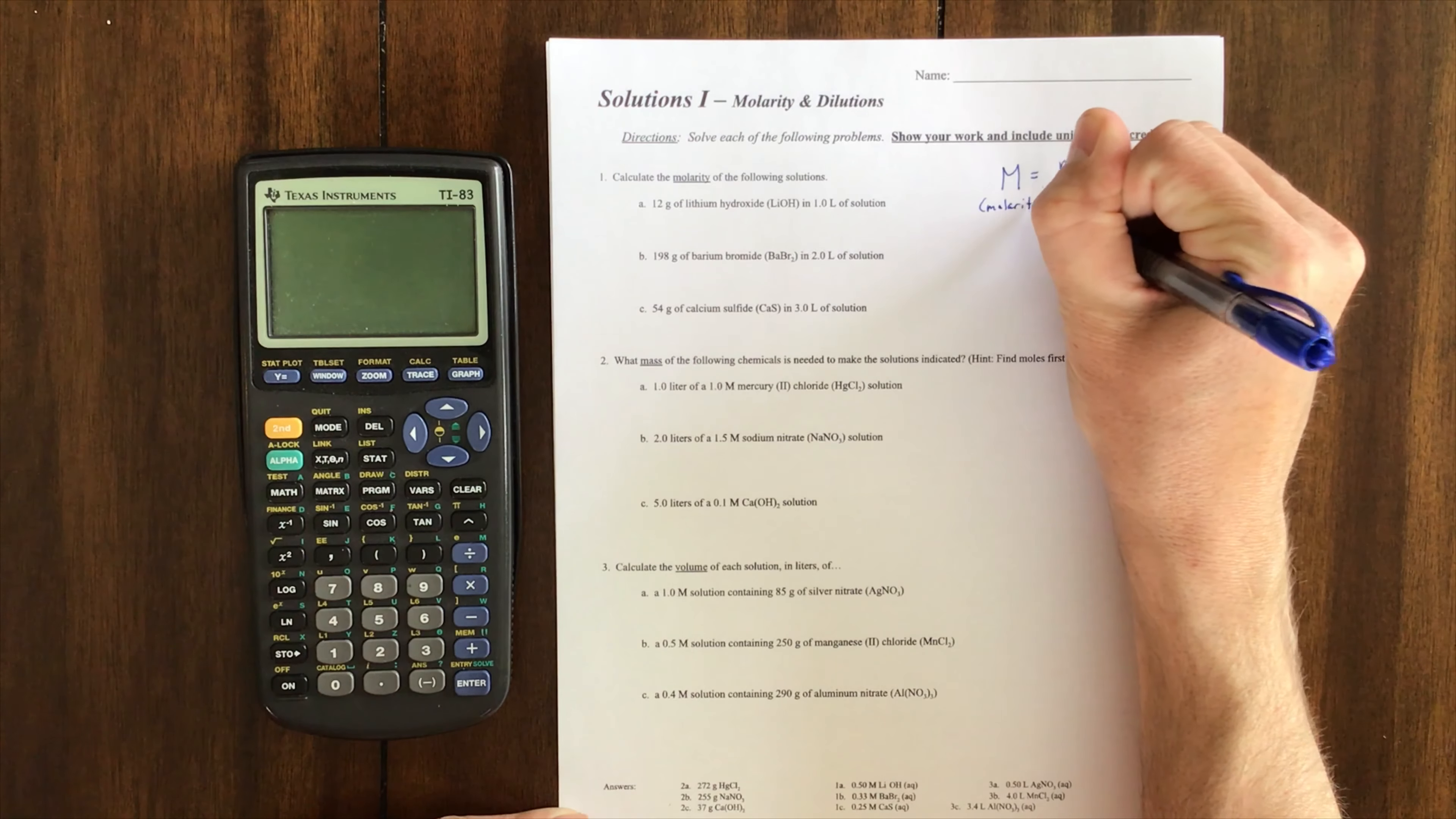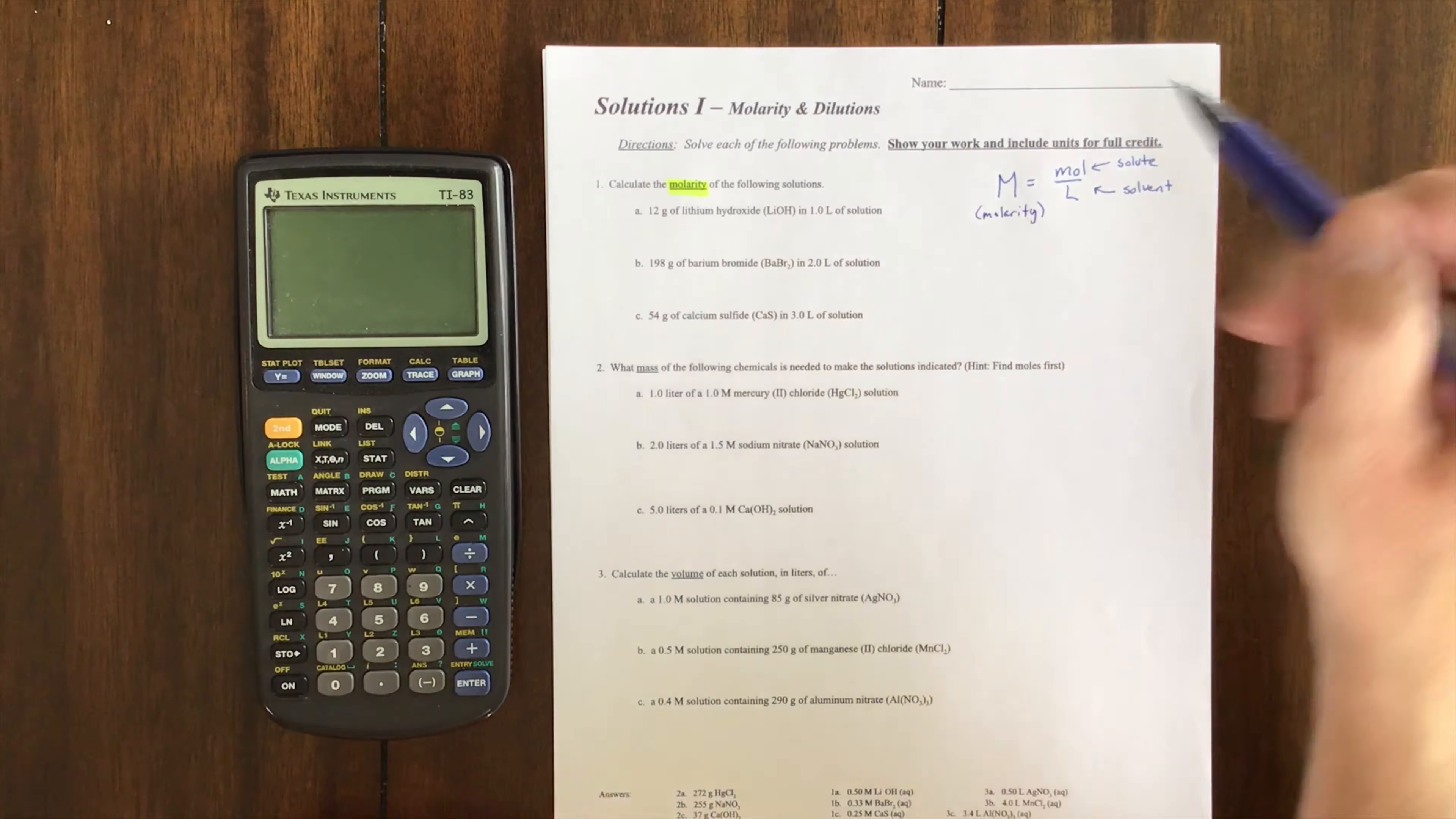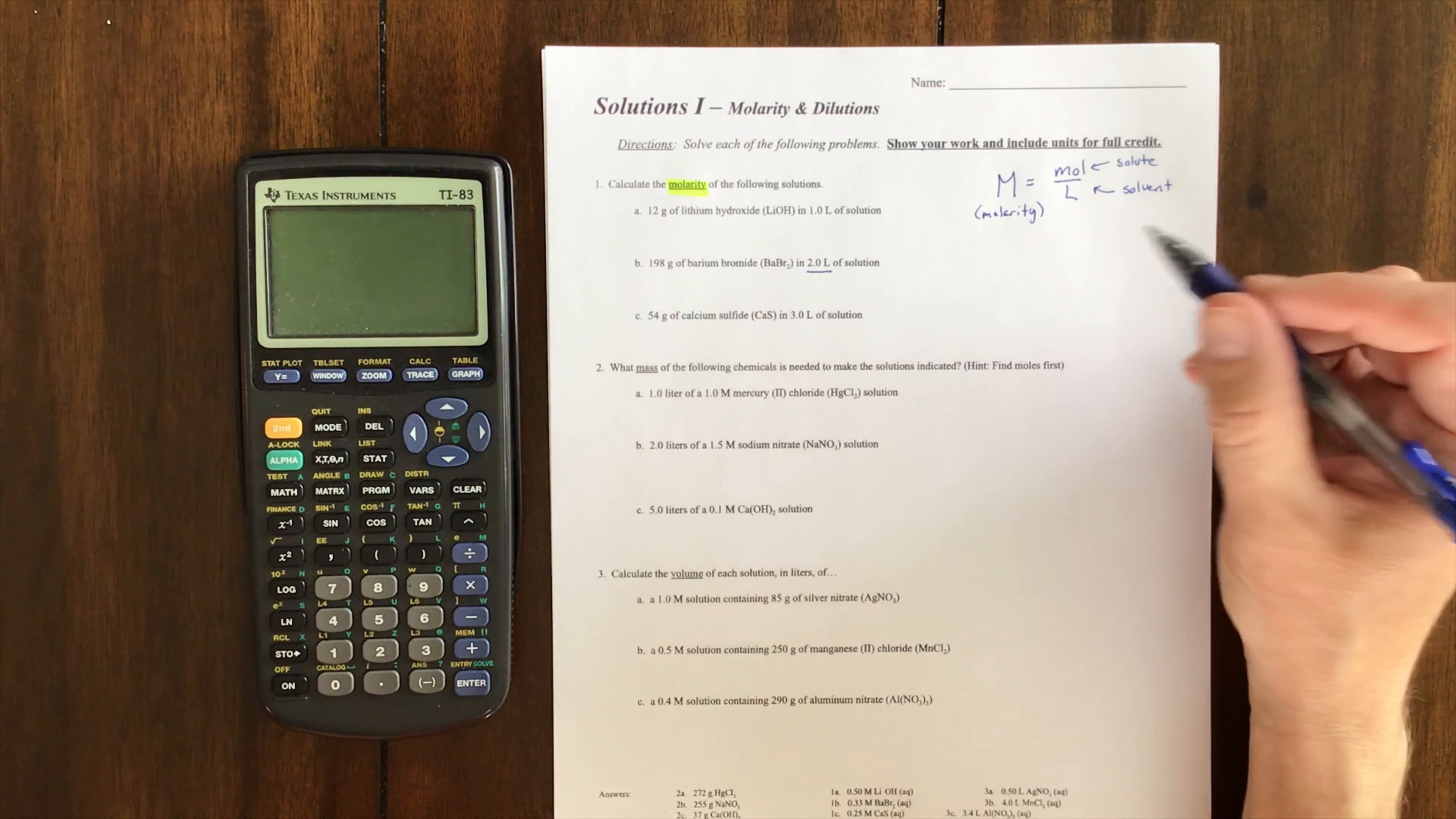This first one says calculate molarity. If I'm calculating molarity, I need moles and I need liters, so I'm going to do letter B on every one of these. I have my liters but I don't have moles.